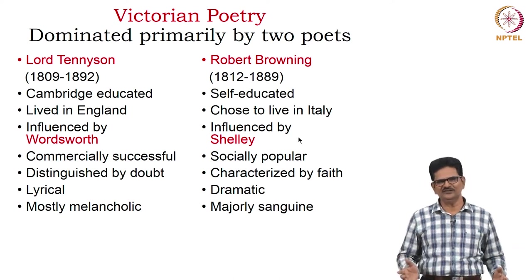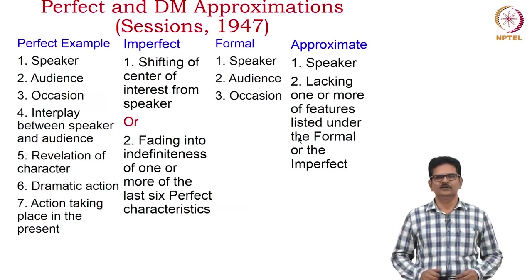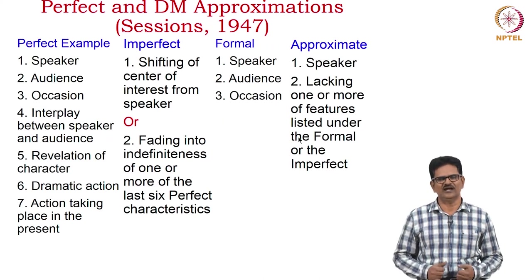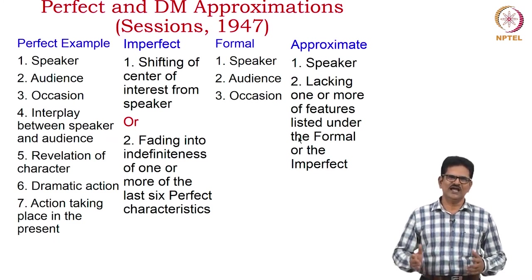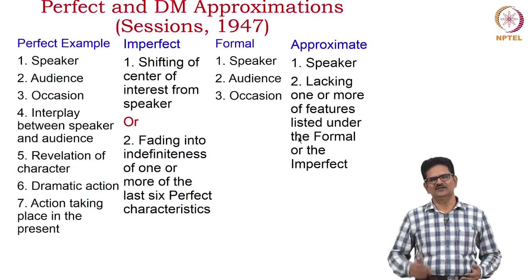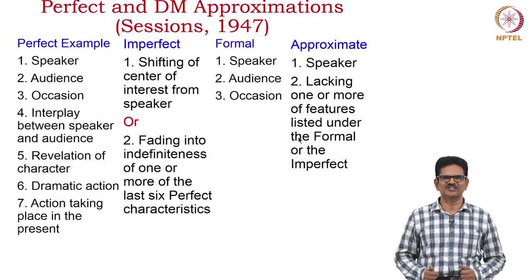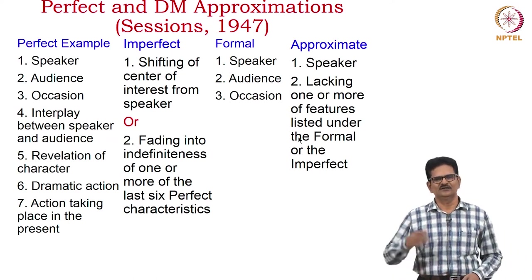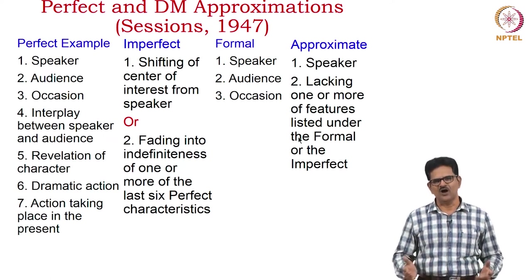These features will help us to understand the major conflict in Victorian poetry: faith and doubt. We said the dramatic monologue is the most important poetic form that we have to understand when it comes to Victorian poetry. A critic called Sessions wrote an article on the dramatic monologue in 1947. She identified seven features of a perfect example of dramatic monologue, and in decreasing order, certain qualities may be missing in some forms. Let's pay attention to these seven features: speaker, audience, occasion, interplay or interaction between the speaker and the audience, revelation of character, dramatic action, and lastly, action taking place in the present. These are the features which we will find in a perfect example of a dramatic monologue.